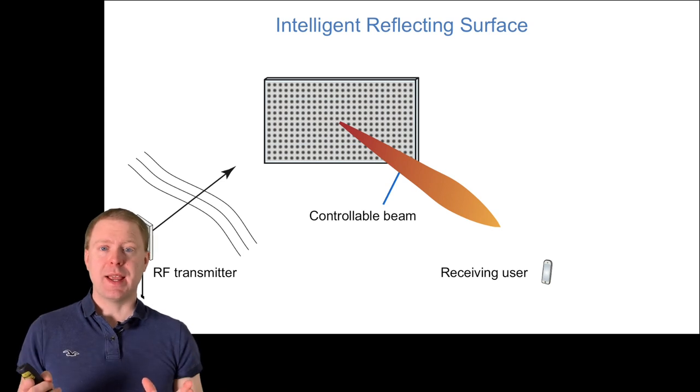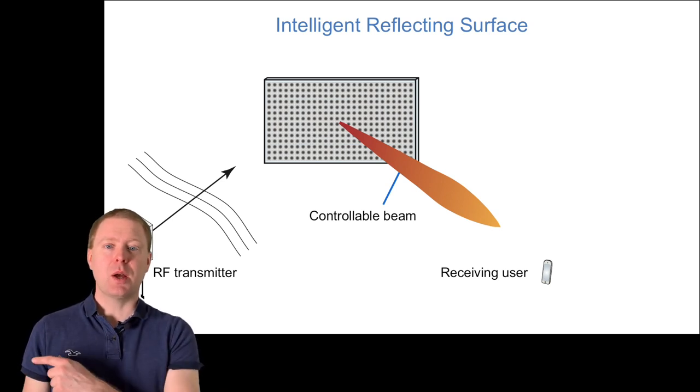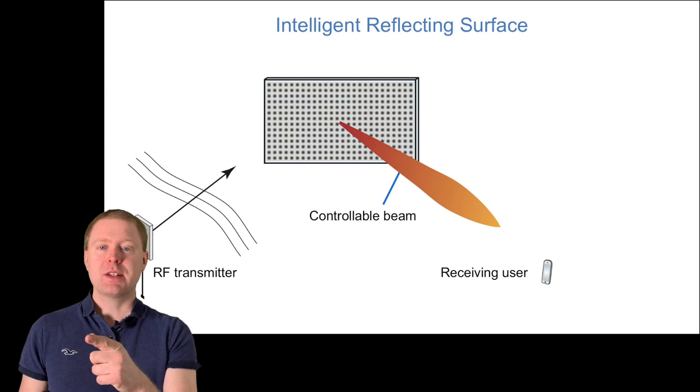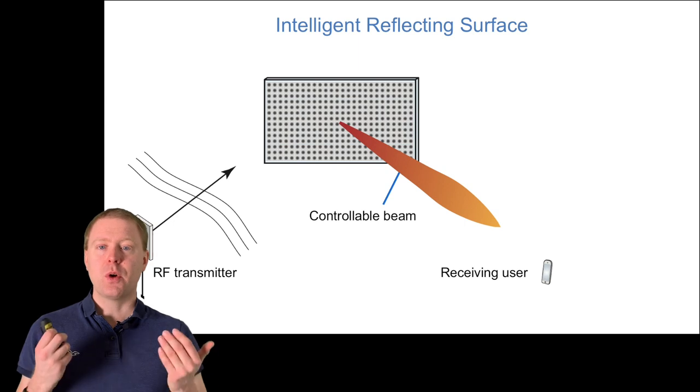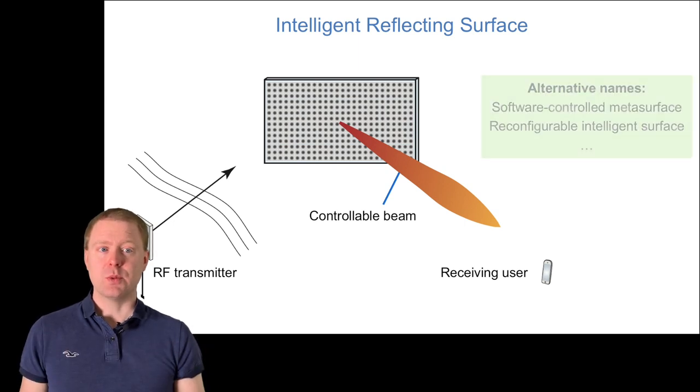An intelligent reflecting surface mimics what a mirror is doing, but in a controllable way. When the signal comes from an RF transmitter, it bounces off with controllable beam direction and shape, and you can, for example, focus it towards a desired user.